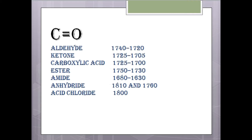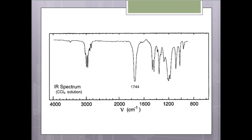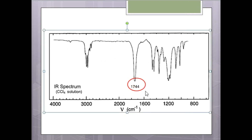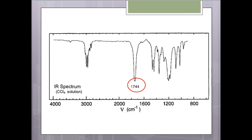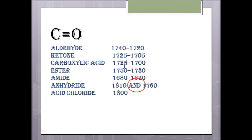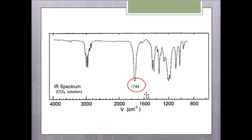The 1800 cm⁻¹ region belongs to acid chloride. By using these wavenumber regions, we can determine which kind of carbonyl group is present in our structure. In our spectrum, we can see a peak at 1744 cm⁻¹, which belongs to the ester group, since ester shows peaks at 1750–1730. So the IR spectrum confirms the presence of an ester group.